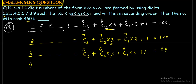Similarly, numbers starting with 4 give 56, and numbers starting with 5 give 35. Adding all the counts: numbers starting with 1 (165) + 2 (120) + 3 (84) + 4 (56) + 5 (35) = 460.